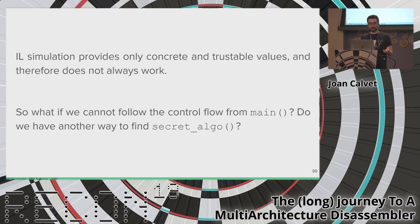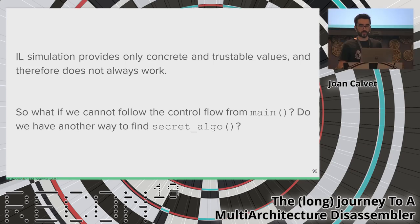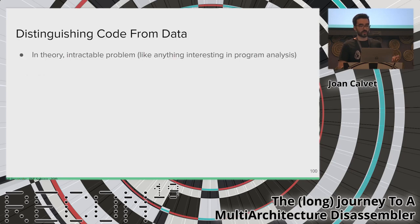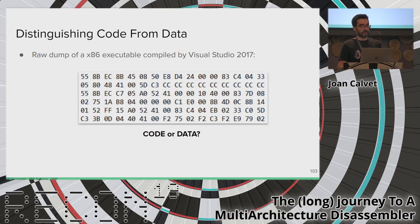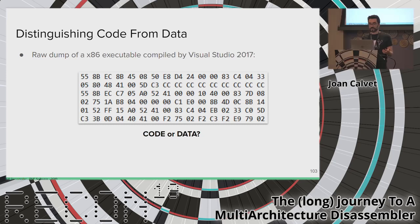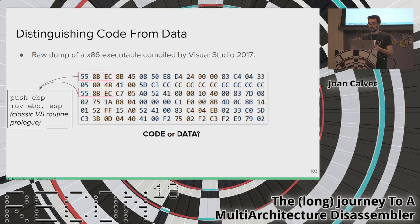The IL simulation is not a silver bullet — it is a concrete emulation that works only when all inputs are known. If we cannot follow control flow from the main routine, do we have another way to find routines somewhere in memory without any reference to them? That brings us to another classic question: can we distinguish code from data just by looking at it? In theory it's an undecidable problem. In practice, almost any values can correspond to machine instructions because most instruction set encodings are very dense. But context can help.